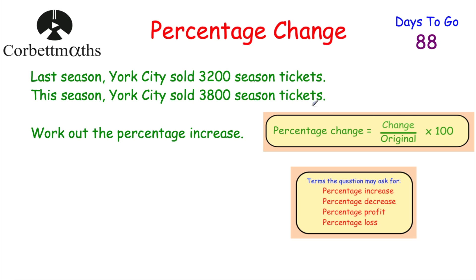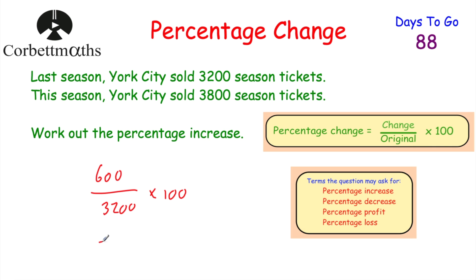To find the percentage increase, we do the change — that's what it's gone up by. So 3,800 minus 3,200 equals 600. The change is 600. Divided by the original, which is 3,200. Then multiply by 100. So 600 ÷ 3,200 × 100 gives us an answer of 18.75%. The increase in season ticket sales was 18.75%.